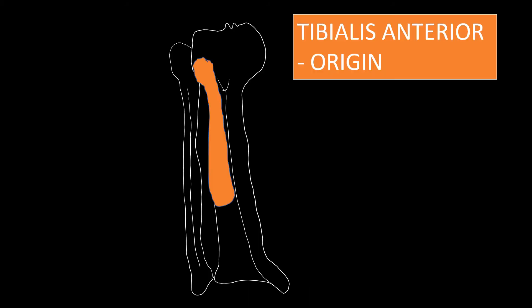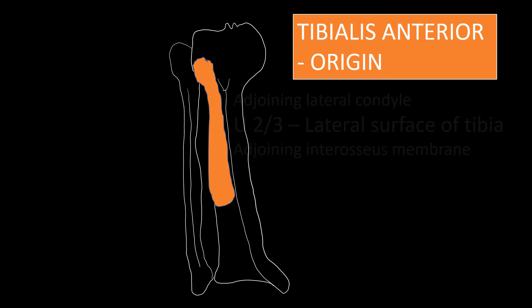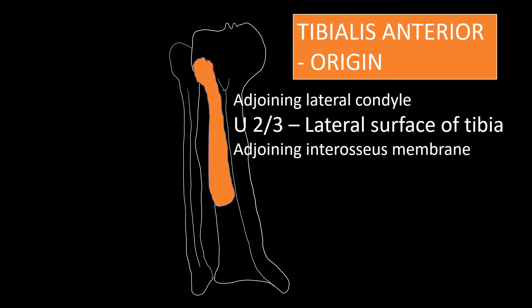Out of the four muscles, tibialis anterior is the only muscle that originates from the tibia. It arises from the lateral surface of the tibia — specifically the upper two-thirds of the lateral surface — and it extends onto the adjoining parts of the lateral condyle and also the adjoining interosseous membrane.